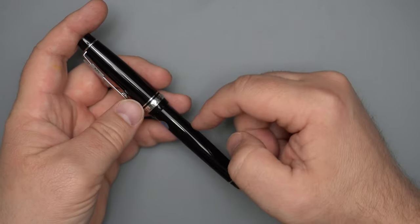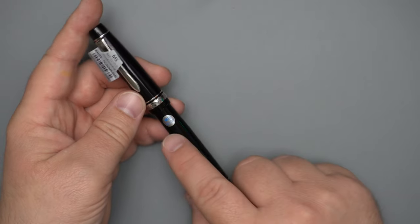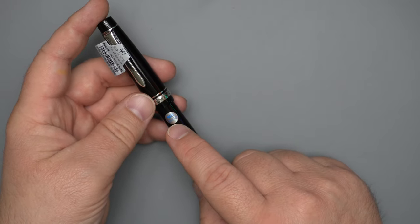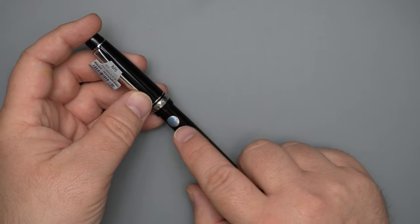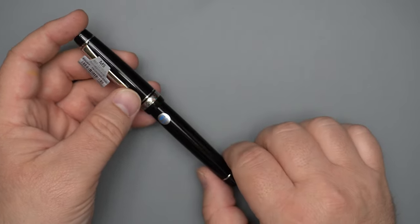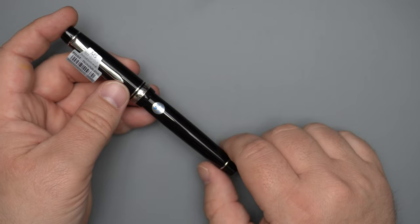You'll also notice this is a black resin pen with rhodium hardware, and a little sticker here, which I suggest you leave on because these pens will look very much alike if you do not leave those stickers on, and you're probably going to want to leave it on because you might want more than one of these.